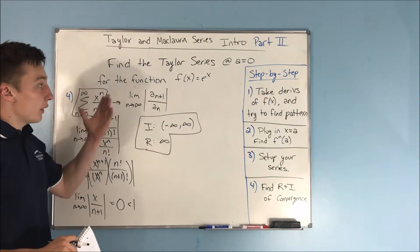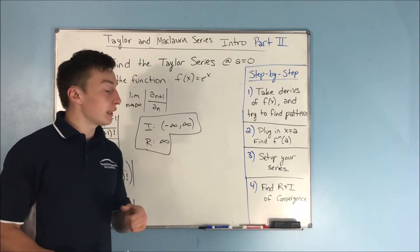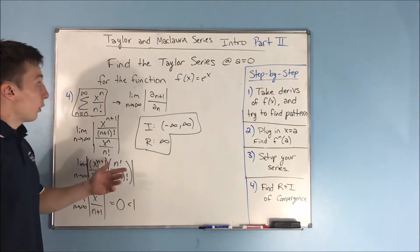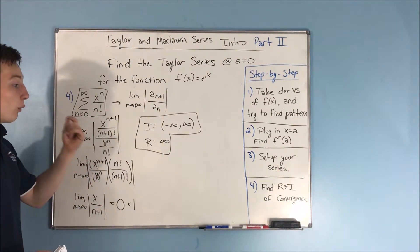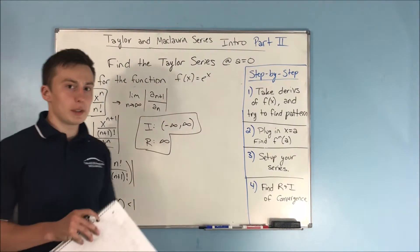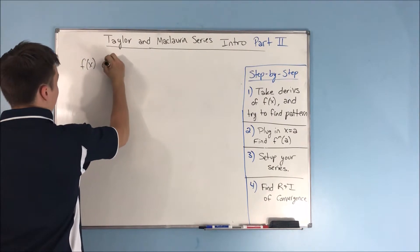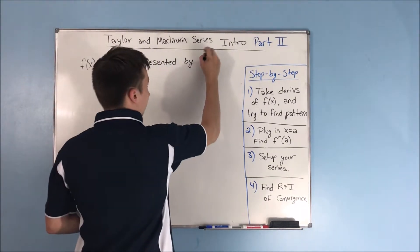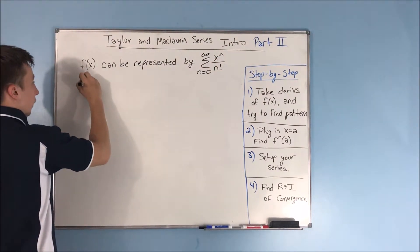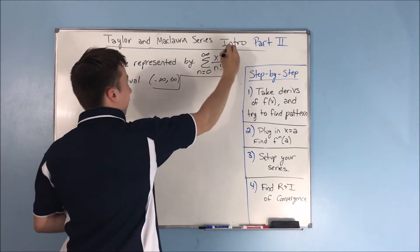To summarize: we took derivatives of f of x to find the pattern, then plugged in x equals a to find the nth derivative of f at a. We set up our Maclaurin series — the Taylor series at a equals 0 — and then found the radius and interval of convergence using the ratio test. Your final answer is that f of x can be represented by the sum from n equals 0 to infinity of x to the n over n factorial, on the interval negative infinity to infinity.